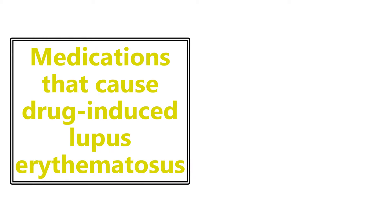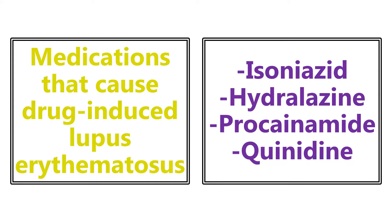Medications that cause drug-induced lupus erythematosus — there are four you need to know: isoniazid, hydralazine, procainamide, and quinidine. There are some other medications out there, but these are the big four that you want to know.